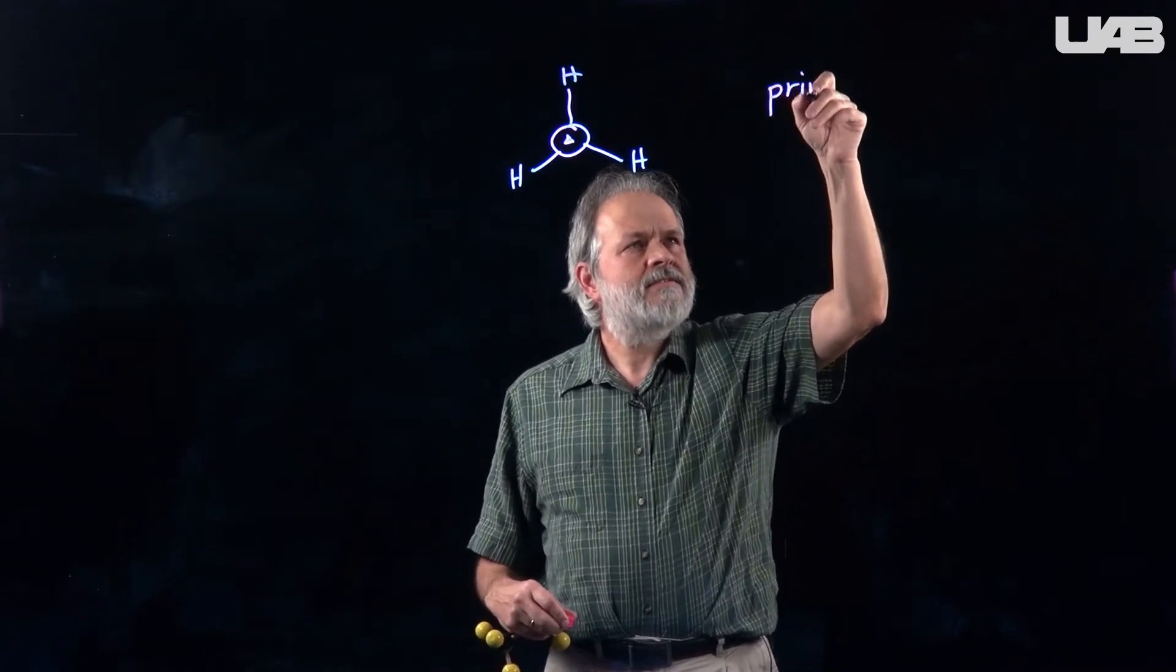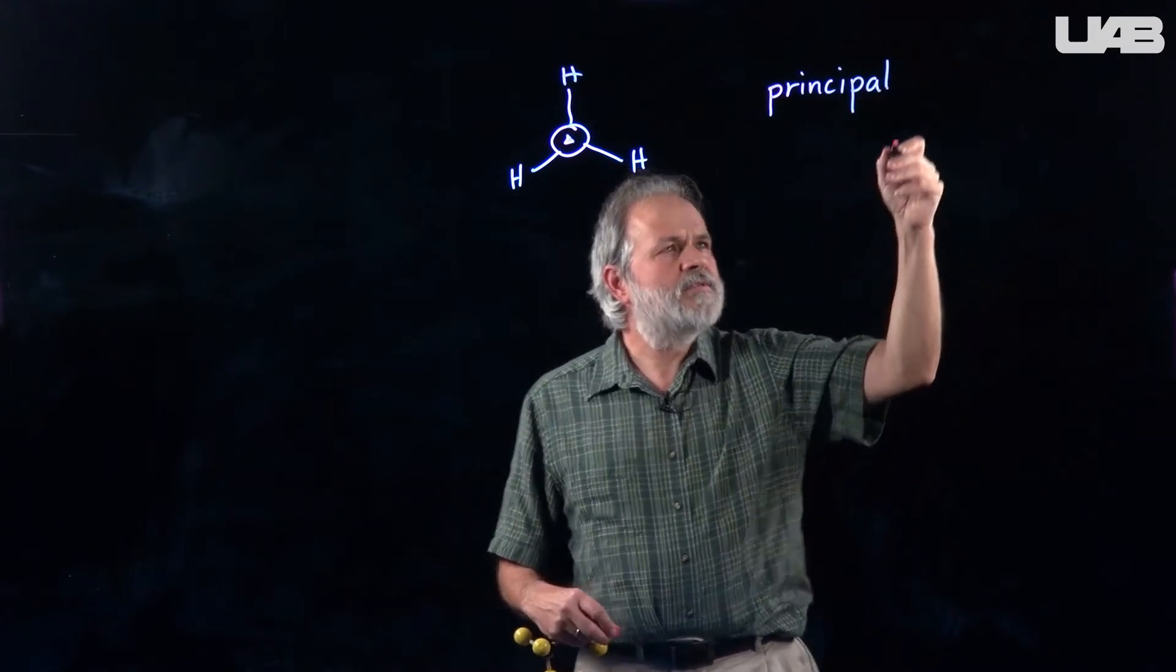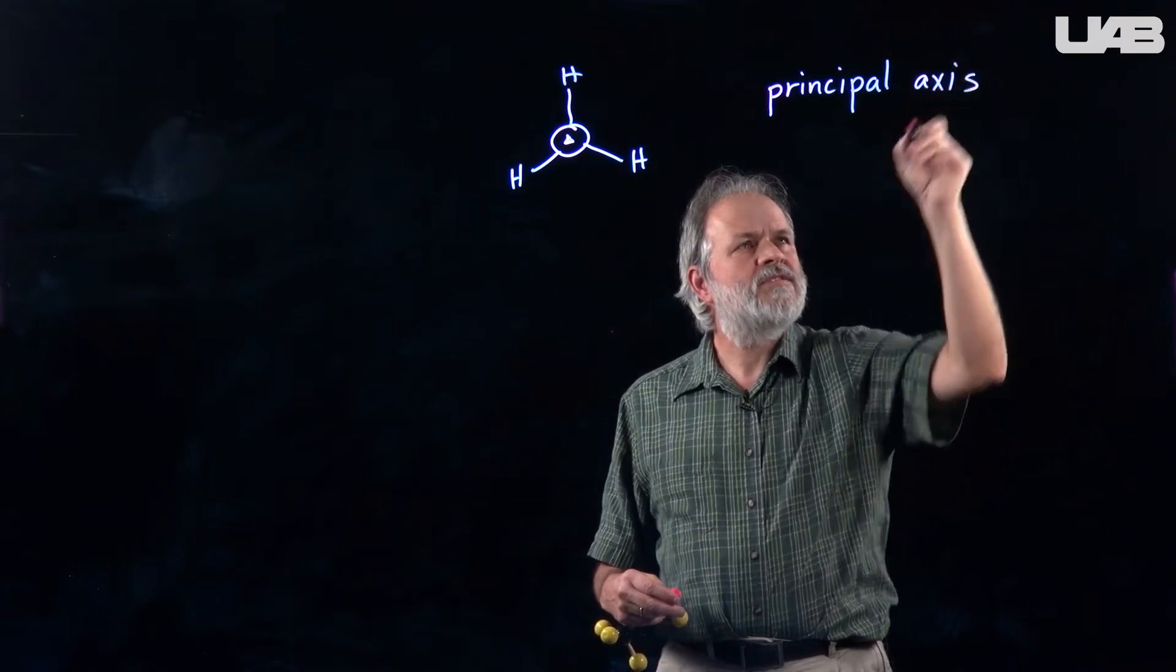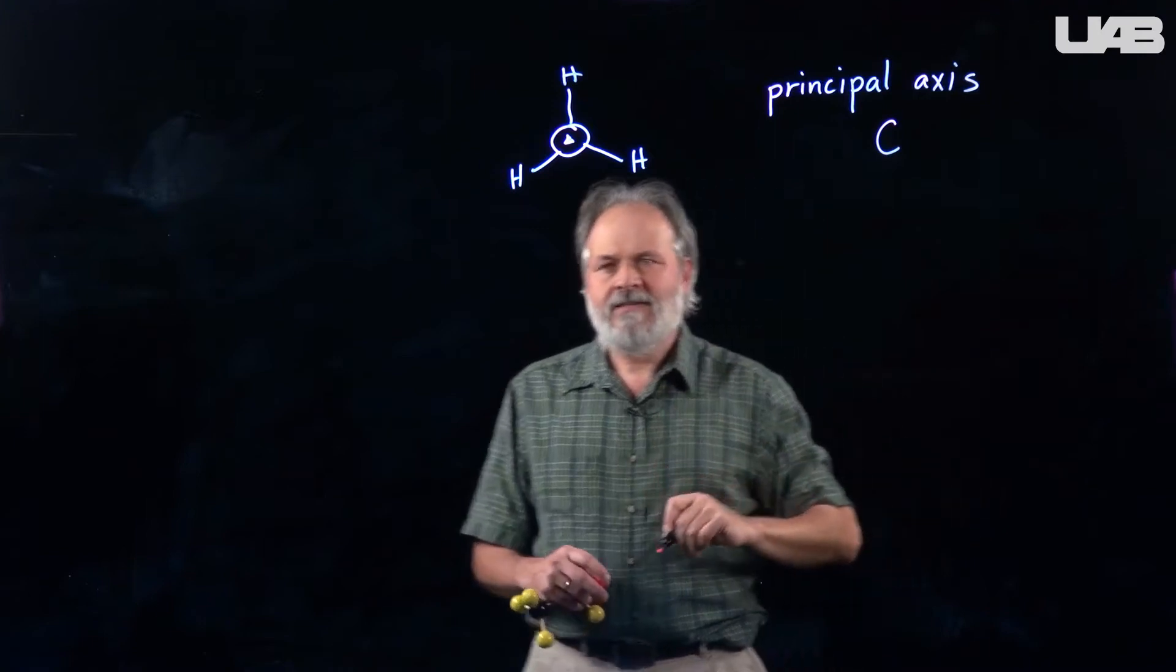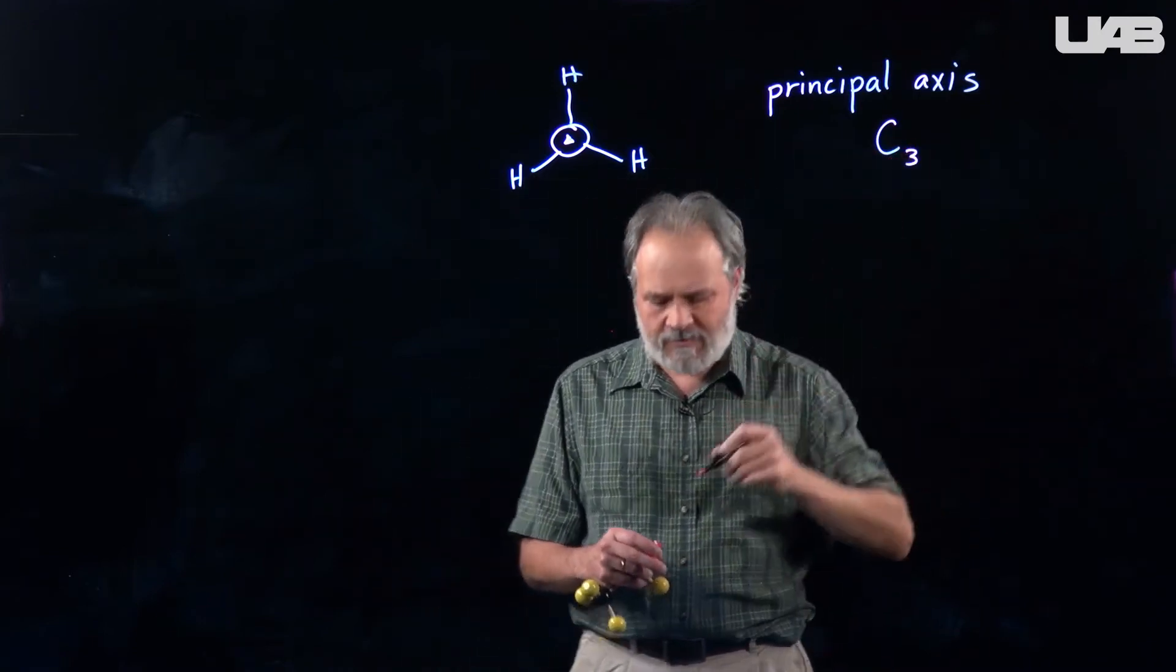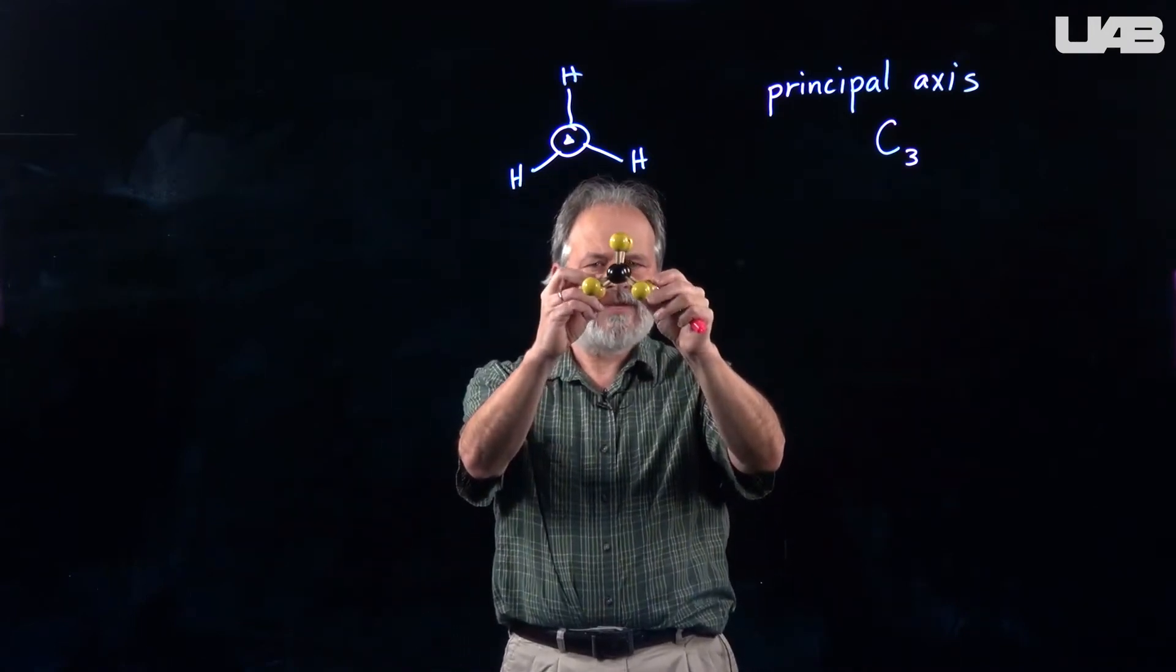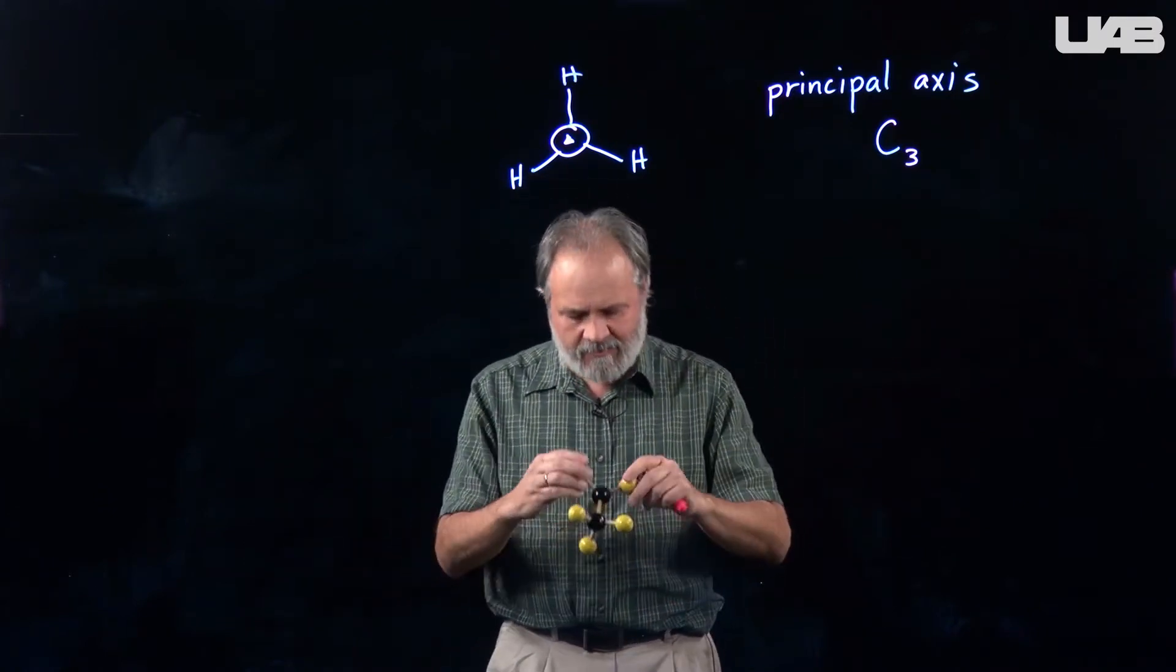So if you have an axis that has a high order, like this one, and even if you have other axes, if you have one that's higher than all the rest, it's called a principal axis. And the notation for principal axis is capital letter C, and then subscript tells you how many times it rotates before you come back to the original position. So ethane, when it's eclipsed, has a C3 rotation axis.